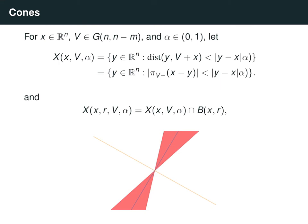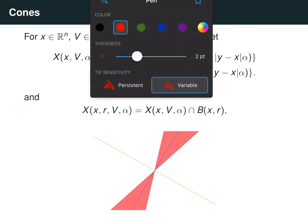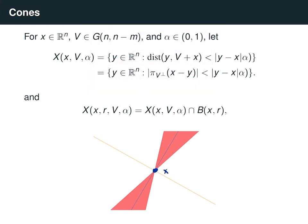Let's define what we mean by a cone. Given a point x in R^n, an n-m dimensional plane v, and a number alpha from 0 to 1, we let the cone centered at x with axis v and aperture alpha be the set of points y such that the distance between y and the plane v plus x is less than |y minus x| times alpha.